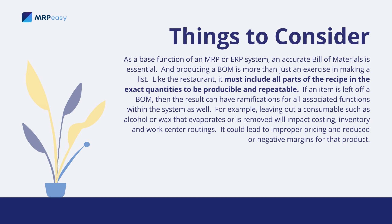Like the restaurant, it must include all parts of the recipe in the exact quantities to be producible and repeatable. If an item is left off a bill of materials, the result can have ramifications for all associated functions within the system. For example, leaving out a consumable such as alcohol or wax that evaporates or is removed will impact costing, inventory, and work center routings. It could lead to improper pricing and reduced or negative margins for that product.